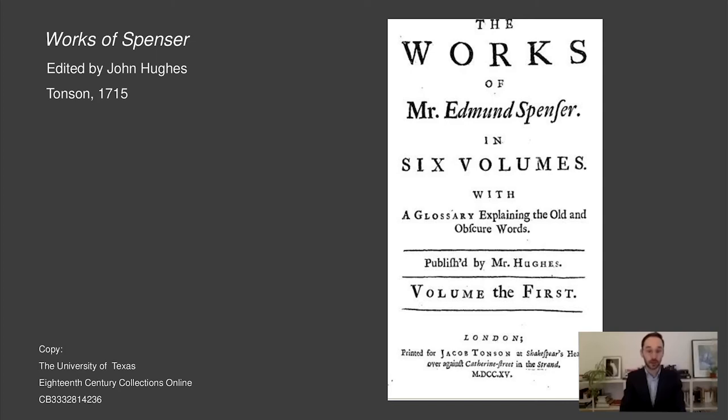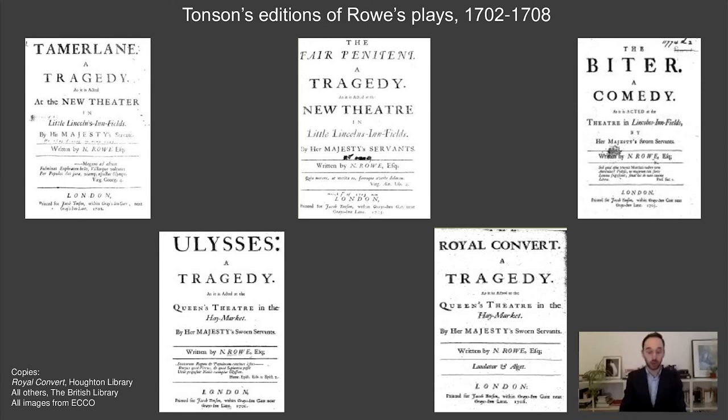First, let us consider the professional relationship between Rowe and Thompson. Even before he edited the Shakespeare edition of 1709, Rowe was one of London's leading playwrights, and Thompson had published almost all of his literary works. Between 1702 and 1708, Thompson was Rowe's exclusive publisher, printing all five of his major plays, including The Fair Penitent, the great theatrical hit of 1703.